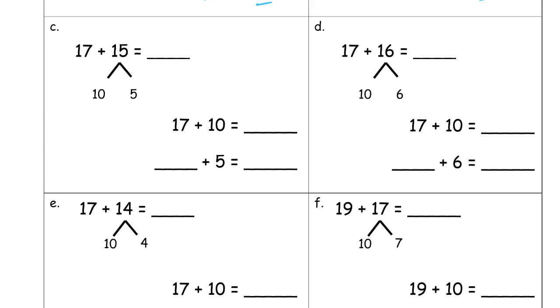So, 17 plus 10, 27. And then we're going to add the 5. 27 plus 5, 32.